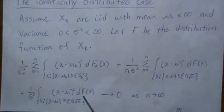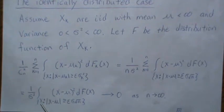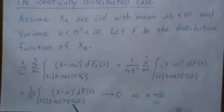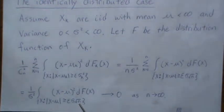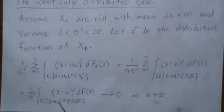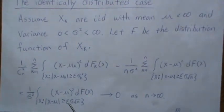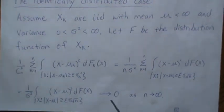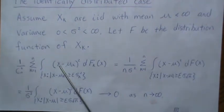Whether it's continuous (dF = f(x)dx) or discrete, we integrate over a restricted region. Everything is fixed except n, and as n goes to infinity the integration region shrinks to the empty set. Integrating over the empty set gives zero, so this quantity goes to zero as n goes to infinity — meaning the Lindenberg condition is met when we're iid.